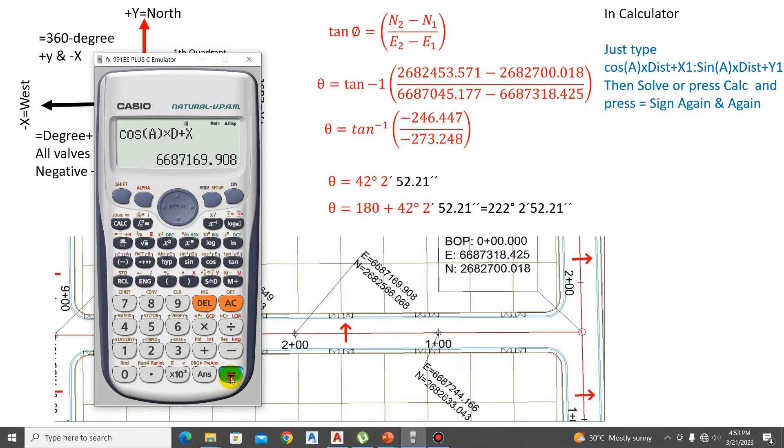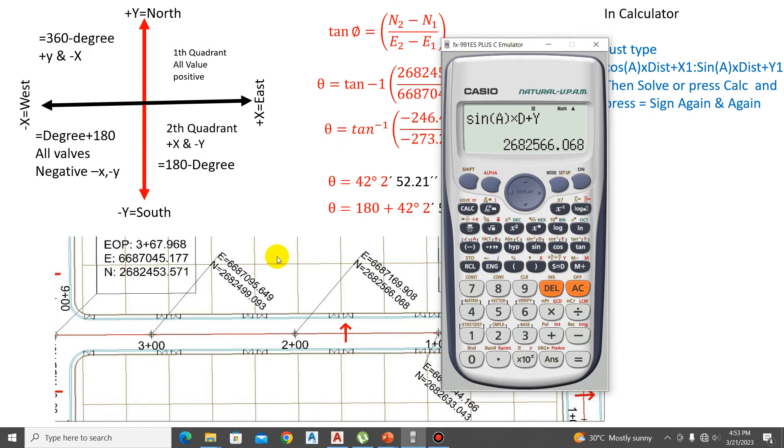Press again, you can check 169.908. Again press for the next coordinate: 566.068. It's correctly working. Now we again type 300. It gives the correct coordinate X. The first coordinate we already entered, you can check this.